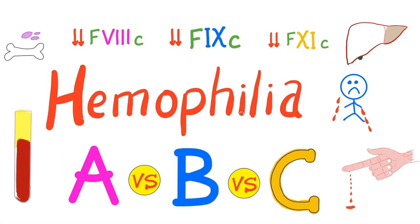Don't forget that hemophilia A is a problem with factor 8. B is factor 9. How about C? Don't say 10 — say 11.